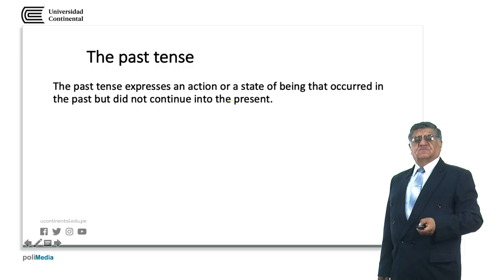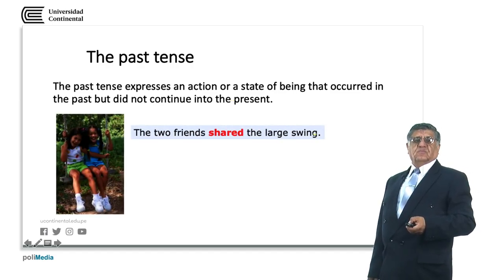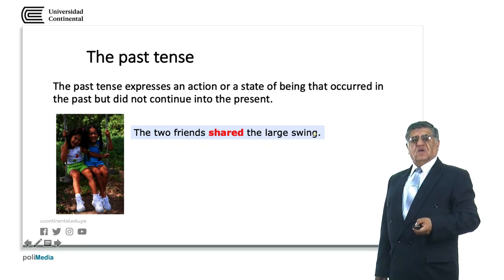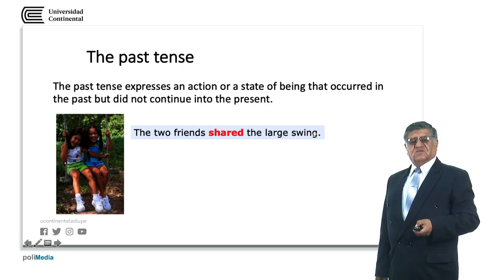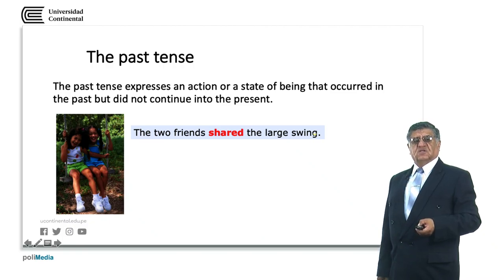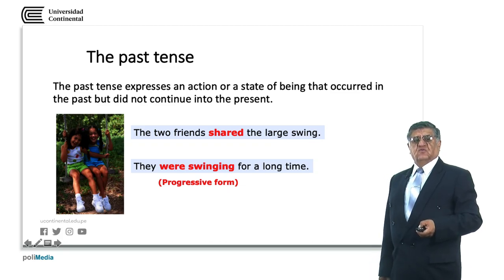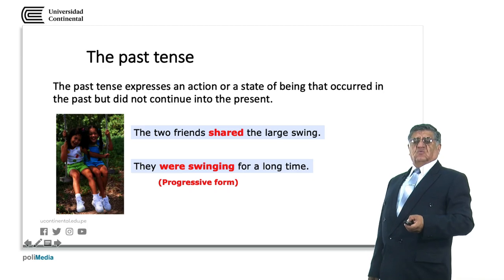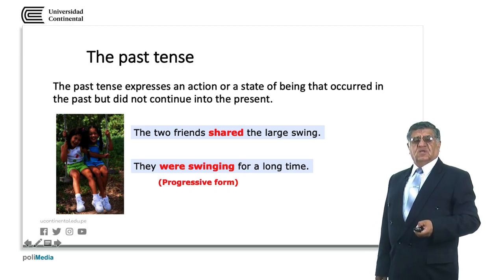The past tense expresses actions that started and finished in the past and do not continue in the present. For example: the two friends shared the large swing — shared is the past form of the regular verb share. We also have a progressive form: they were swinging for a long time — were is the verb to be for the plural in the past, and swinging is the continuous form, expressing a situation occurring at a particular time in the past.